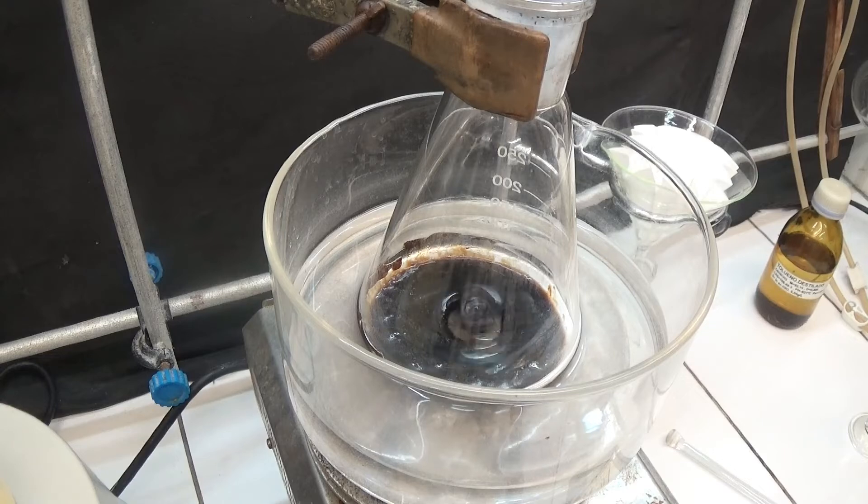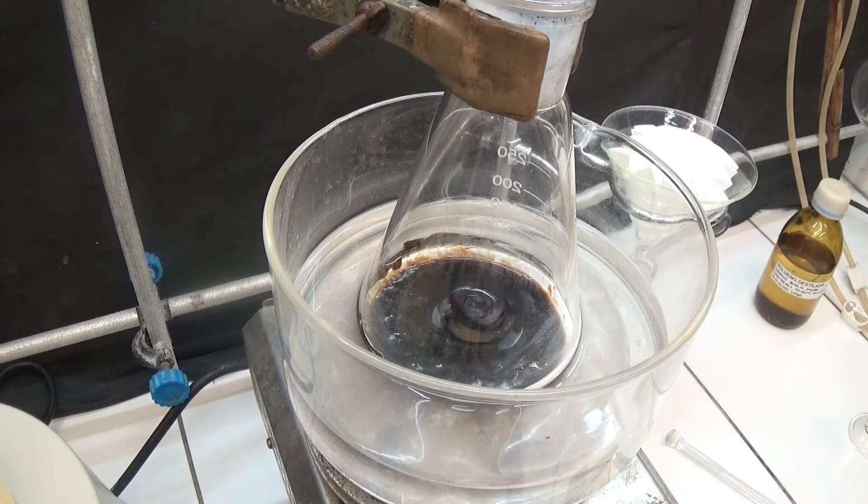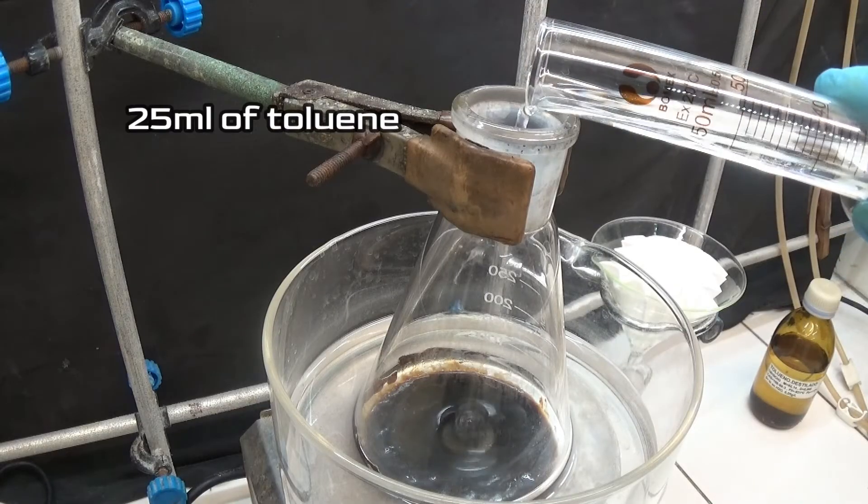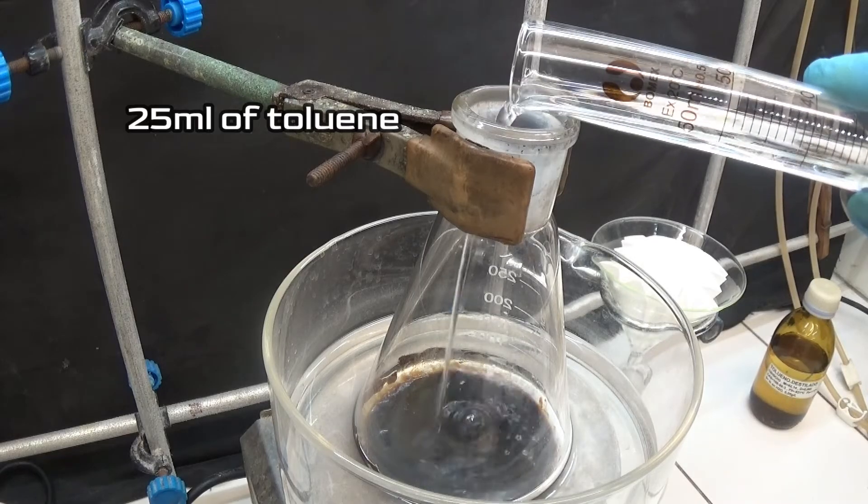Once all the water has evaporated, a dark residue remains in the flask. Add 25 milliliters of toluene and we will eliminate all the water with a Dean-Stark.